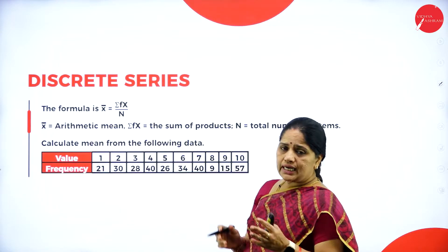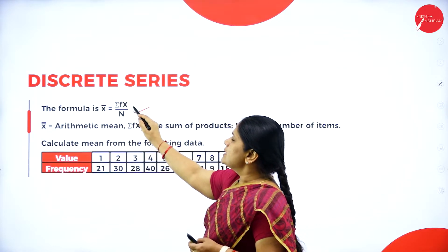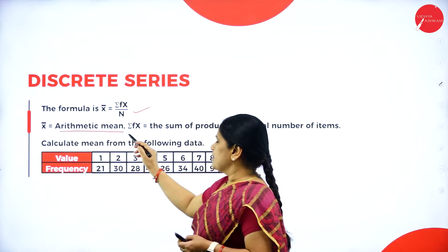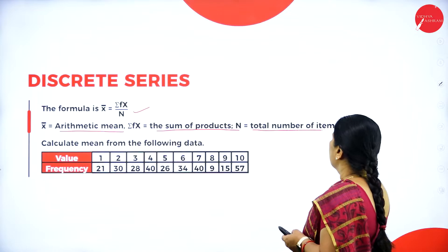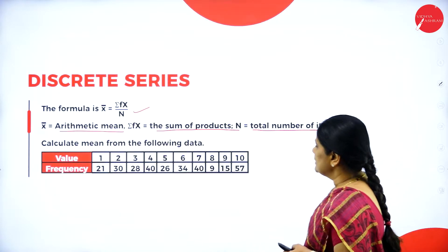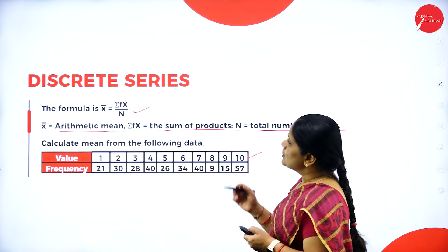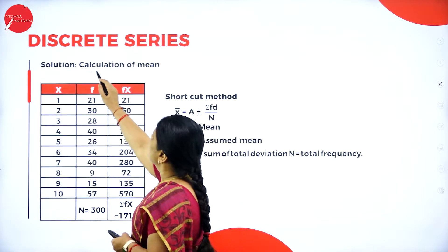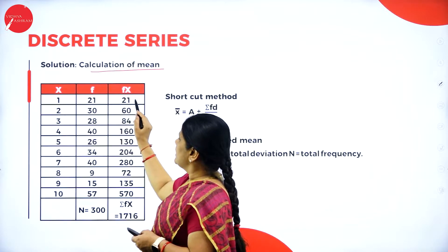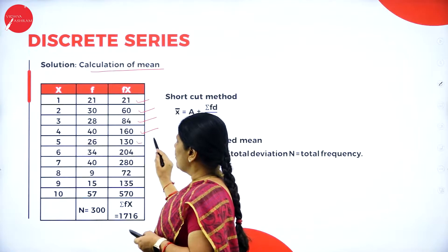Now for the discrete series — discrete series means values along with frequency. The formula is mean = sigma fx divided by n, where x-bar is the arithmetic mean, sigma fx is the sum of the products, and n is the number of items. Calculate the mean from the following data: 10 values are given along with frequency. We write f into x (fx): 1×21=21, 2×30=60, 3×28=84, 160, 130, 204, 280.